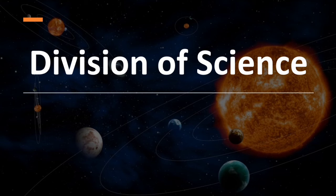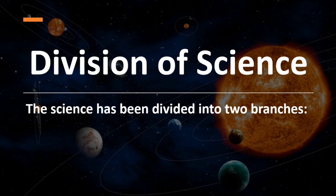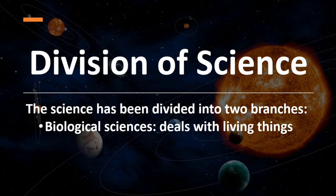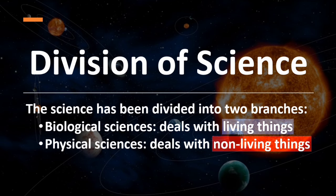Science has been divided into two branches. Number one: biological sciences, that deals with the study of living things. Number two: physical sciences, that deals with the study of non-living things.